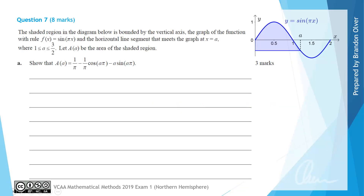For question 7, we're told that the shaded region in the diagram shown is bounded by the vertical axis, the graph of the function f(x) = sin(πx), and the horizontal line segment that meets the graph at x = a, where 1 ≤ a ≤ 3/2. Let A(a) be the area of the shaded region, and for part (a) our job is to show that A(a) equals that rule.